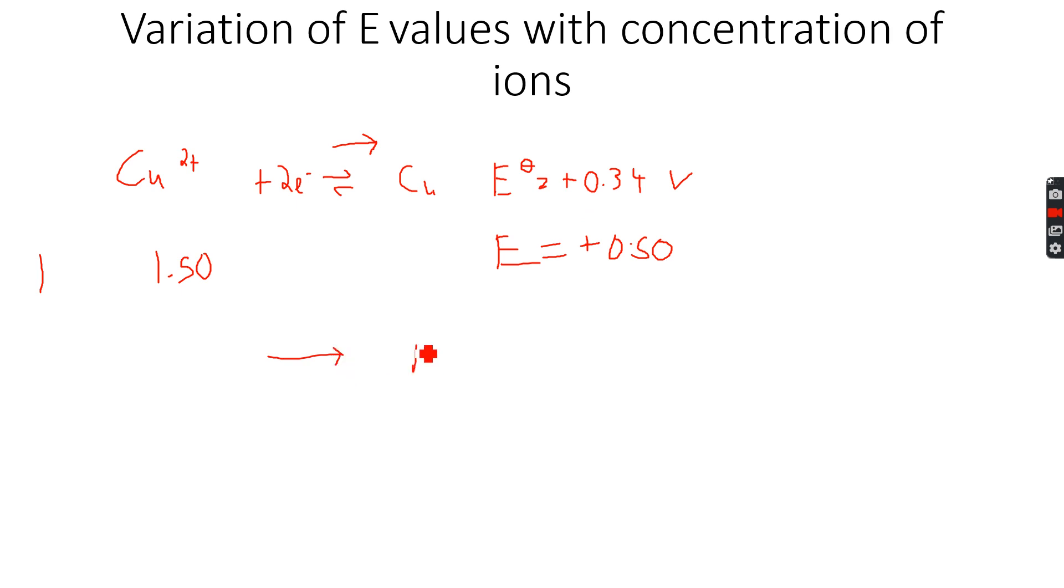Shifting to the right means E more positive. We cannot say E° anymore because the concentration is not in standard conditions. And if the equilibrium shifts to the left, then E is more negative. This is the general conclusion we know.